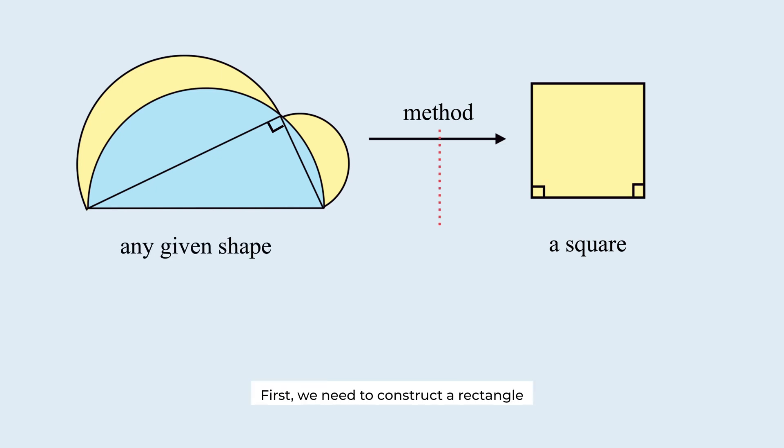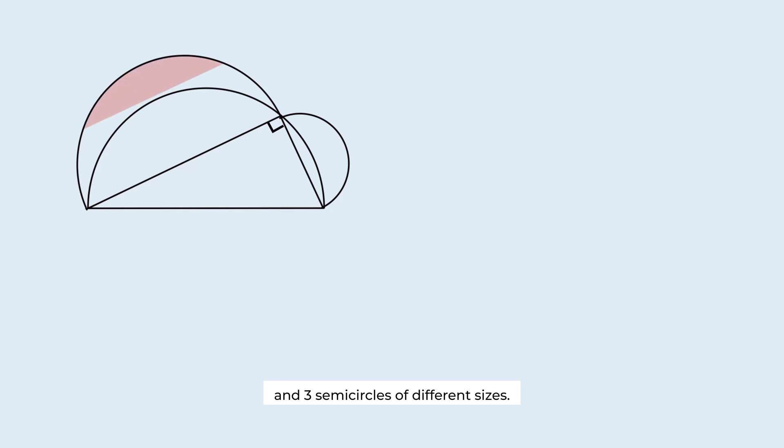First, we need to construct a rectangle with the same area as the given shape. In this problem, we have a right triangle and three semicircles of different sizes.